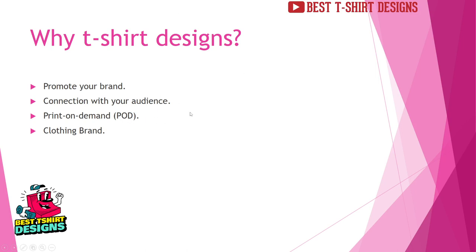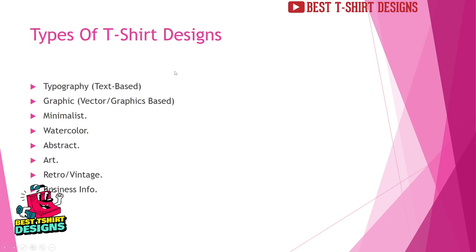Next is types of t-shirt designs. It is a big sector. There are many kinds and many variations, but these are just the basics. First is typography — that means text-based design. It doesn't have to be very detailed or very creative; just placing two lines together becomes a typography design. Then there is graphic t-shirt design, where we use vectors or graphics to represent an idea. Then there is minimalist — very simple, very basic designs, like a one-line text. There are also watercolor, abstract, retro, vintage, business info, and many more.